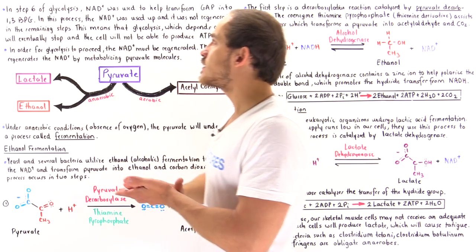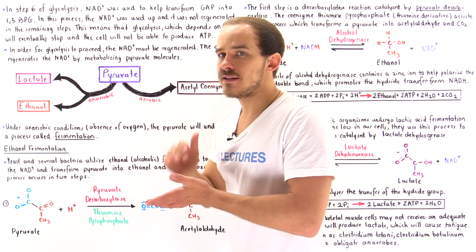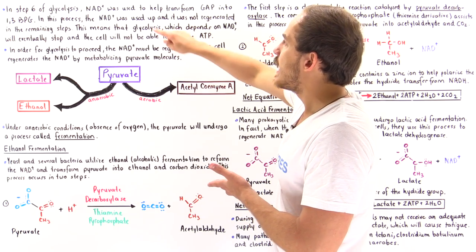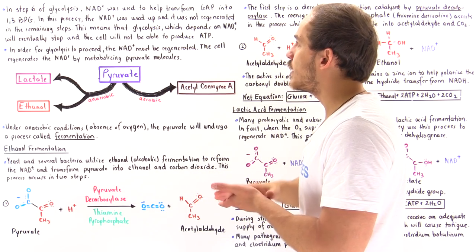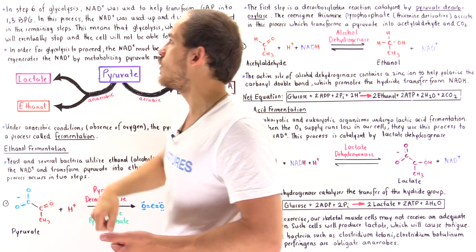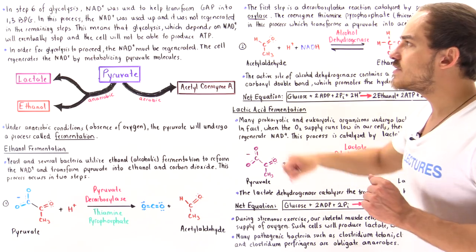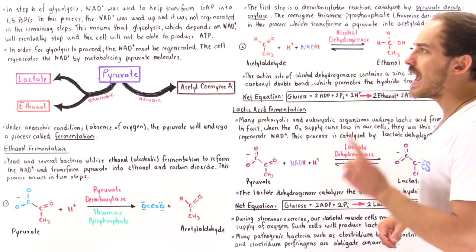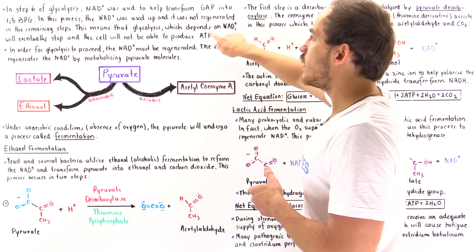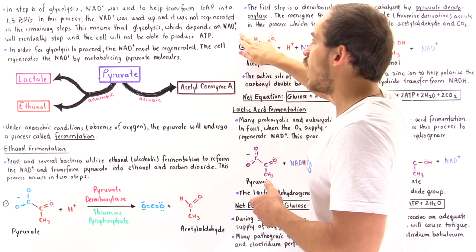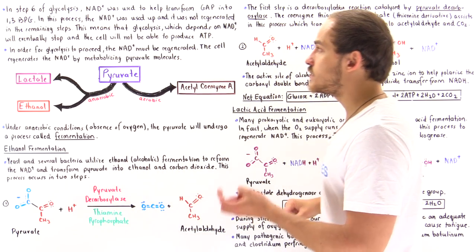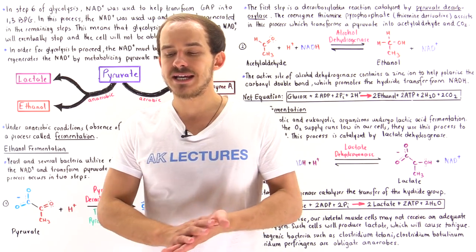In step 6 of glycolysis, NAD+ — nicotinamide adenine dinucleotide in its oxidized form, the molecule that comes from niacin, vitamin B3 — acts as a coenzyme and helps GAP dehydrogenase transform glyceraldehyde 3-phosphate into 1,3-bisphosphoglycerate. In this process, NAD+ is used up and never regenerated in the remaining steps of glycolysis. When the concentration of NAD+ runs out, glycolysis will stop and the cell can no longer produce ATP.